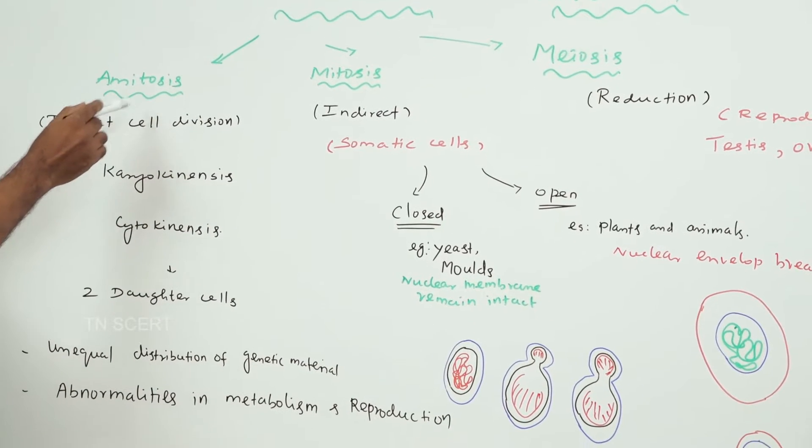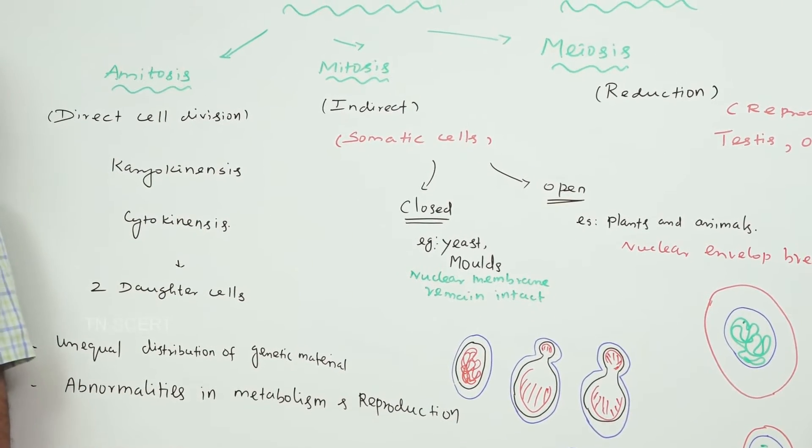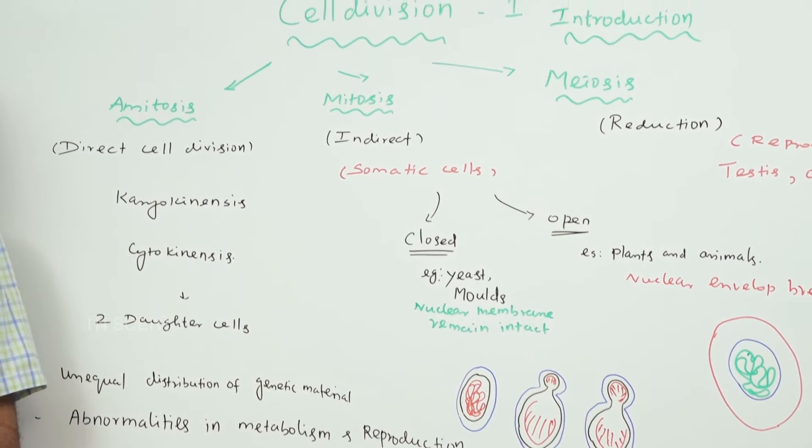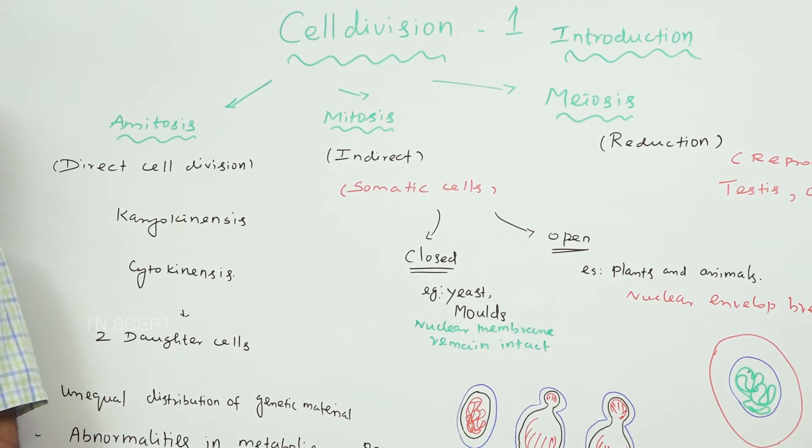Amitotic cell division, the direct cell division, amitosis, nereidai cell peridhal enda adekapadum. Takes place in lower plants and animals, as well as bacteria. Thaavarangal, vilangakal, matrum, bacteriangal il naadeparum.